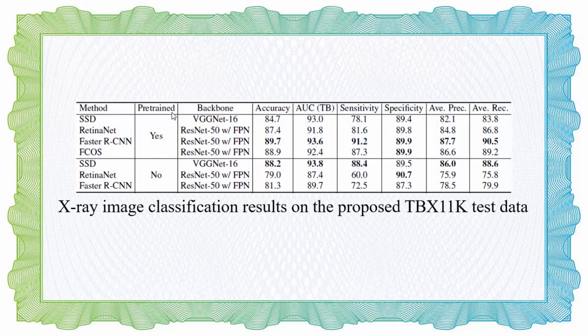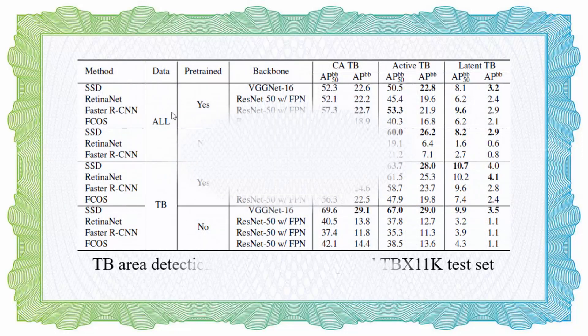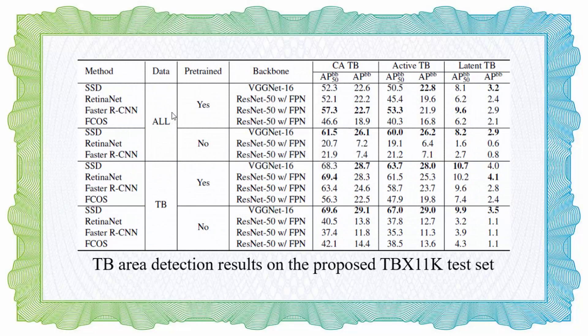Here are X-ray image classification results on the proposed TBX11K test data. Here are TB area detection results. The column of data indicates whether to use all test X-rays for evaluation or only TB X-rays in the test set. CA denotes class agnostic. Please find more details in our paper. Thank you for your attention.